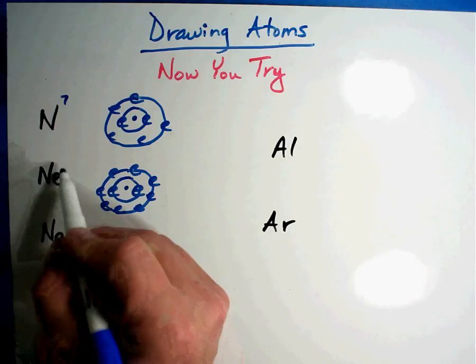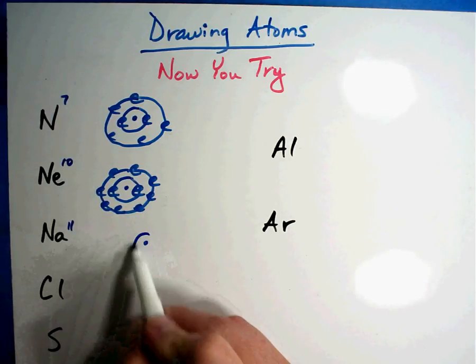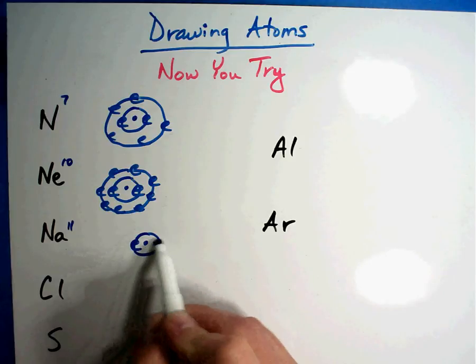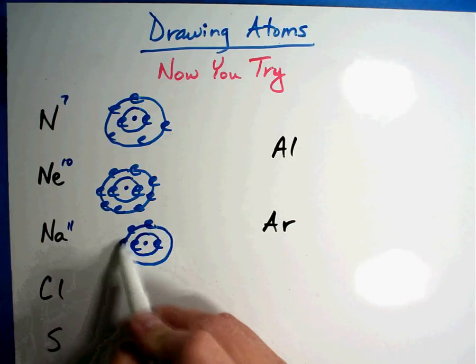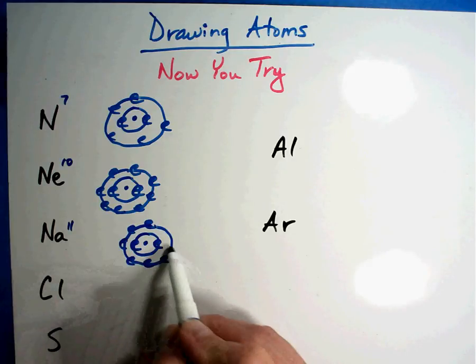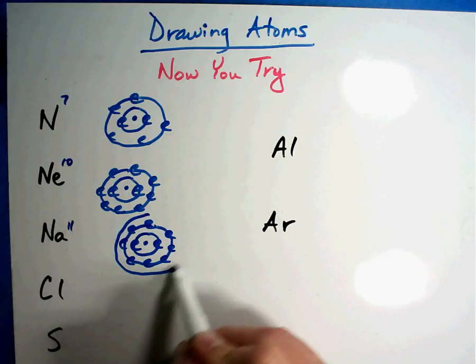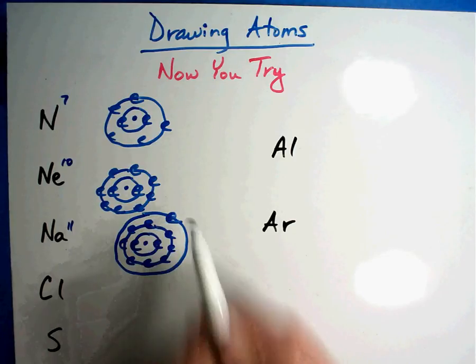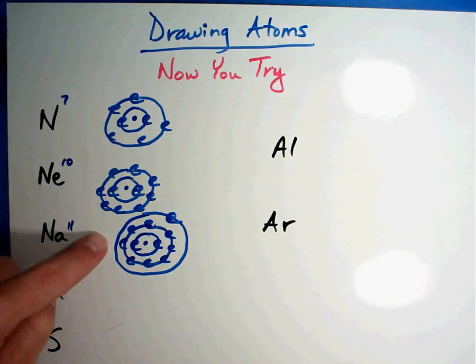Sodium is number eleven. So that means there are two in the first, one, two, three, four, five, six, seven, eight in the second. Eight and two is ten. One more ring that I'm going to cram in there, and one in the outside. He's not full either. He's close, but he had to put one more electron in the outside ring.